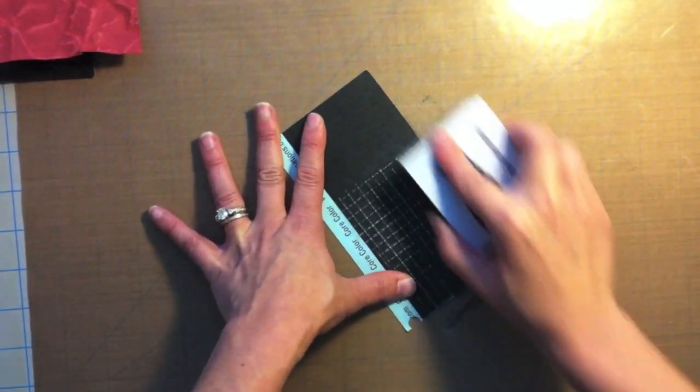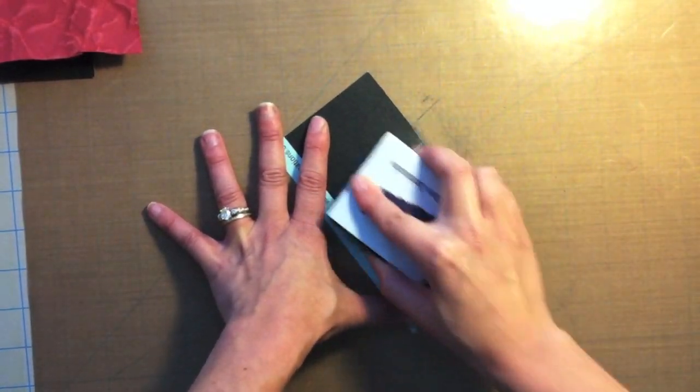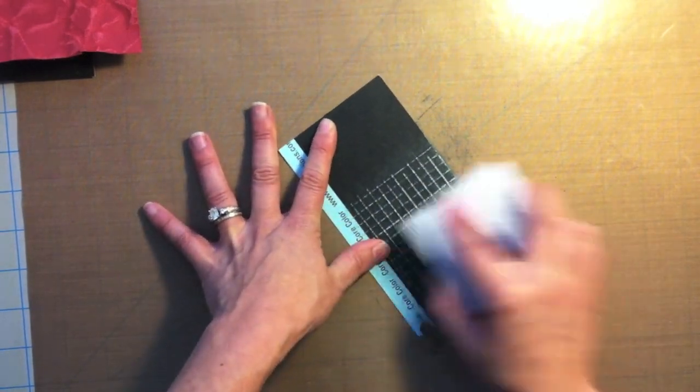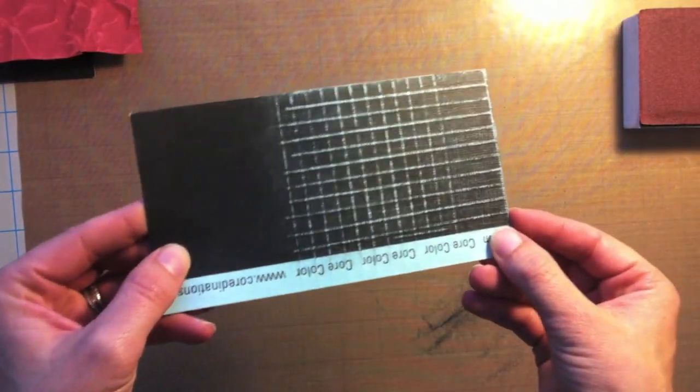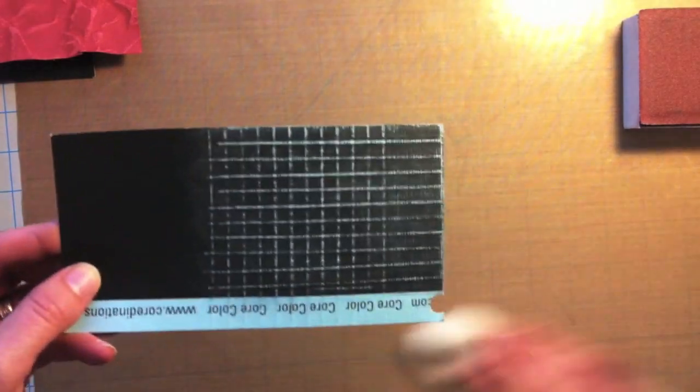It's a super fun and quick and easy way to add a pattern or texture or something to your card base. You can do a whole sheet of this and keep it off to the side and then you'll always have that to use in the future.